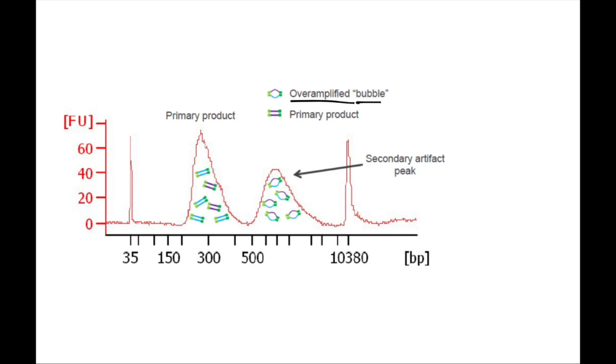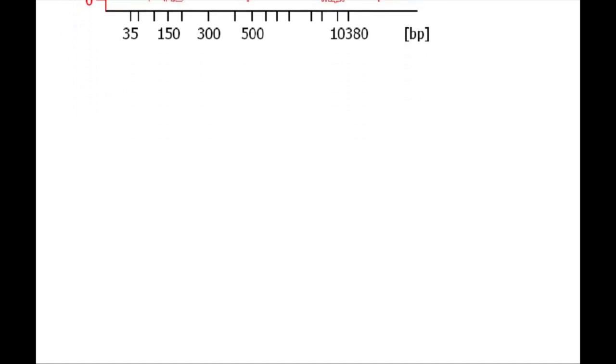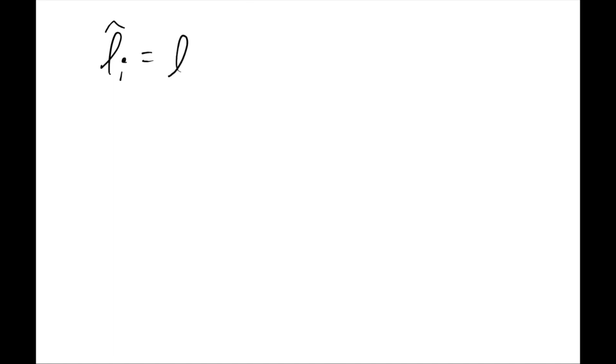So I promised to explain how this mean fragment length is actually important within the context of our understanding of length in terms of real abundances. There's a concept known as the effective length, often symbolized as l̃i, which is calculated as the length of a gene Li minus the mean fragment length μFLD plus 1.